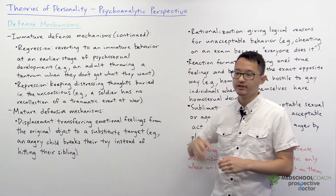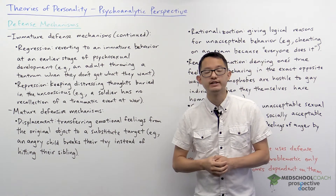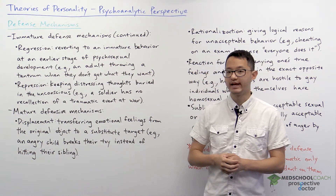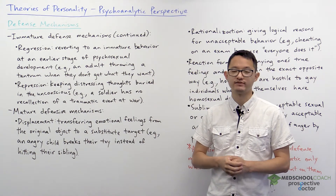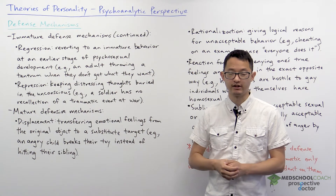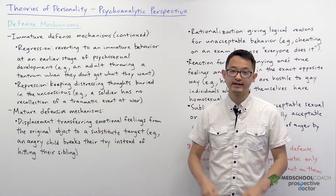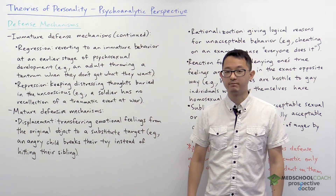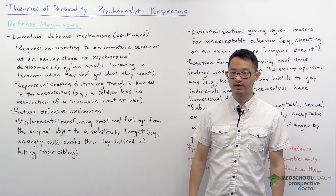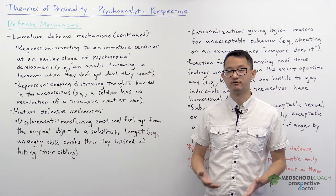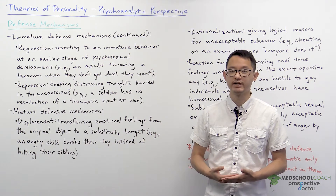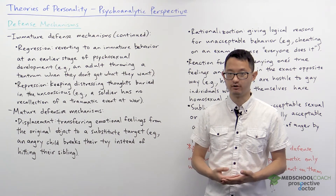We have regression, which is reverting to an immature behavior at an earlier stage of psychosexual development. An example is a person at a restaurant who throws a tantrum because the restaurant has run out of the dessert they want.